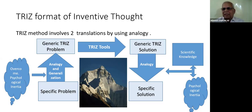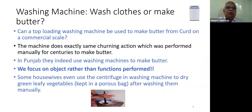Washing machines. Do we wash clothes or make butter by using it? Can top loading washing machine be used to make butter from curd on commercial scale? This churning action which was used for centuries to make butter is the same churning action which this pulsator does. If it does the same churning action, there's no reason why it could not make butter from curd. In fact in Punjab they do it.